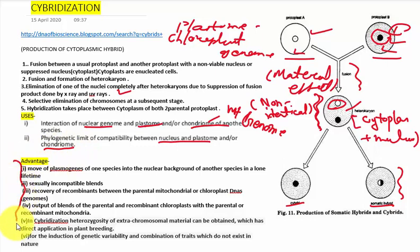Then these are the advantages: sexually incompatible parents will form the recovery of recombinants between the parental mitochondria and the chloroplast DNA. And the cybridization heterogeneity of extra chromosomal material can be obtained which has direct application in plant breeding. And the induction of genetic variability and the combination of traits does not exist in nature.